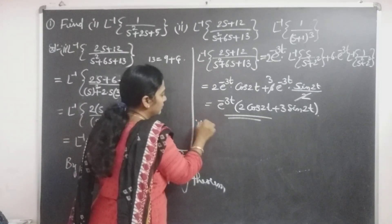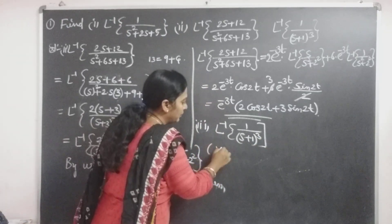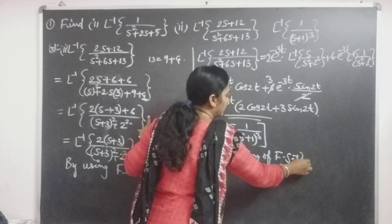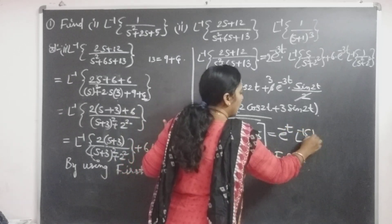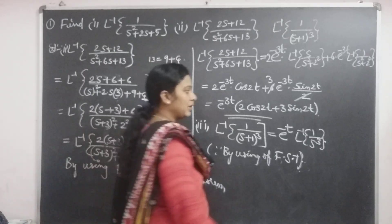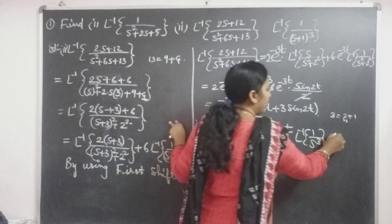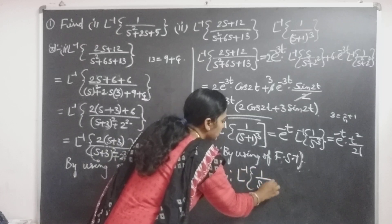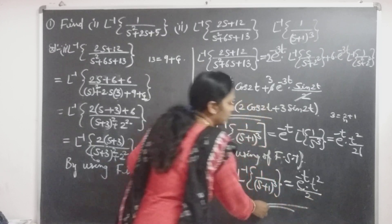The third one is L inverse of 1/(S+1)³. By the first shifting theorem, the 1 in (S+1) goes outside as e^(−t), and we evaluate L inverse of 1/S³. Using the property L inverse of 1/S^(n+1) = t^n / n!, here n = 2 since the cube = 2+1. So the result is e^(−t) · t²/2!  = e^(−t) · t²/2. Therefore L inverse of 1/(S+1)³ = e^(−t) · t²/2.